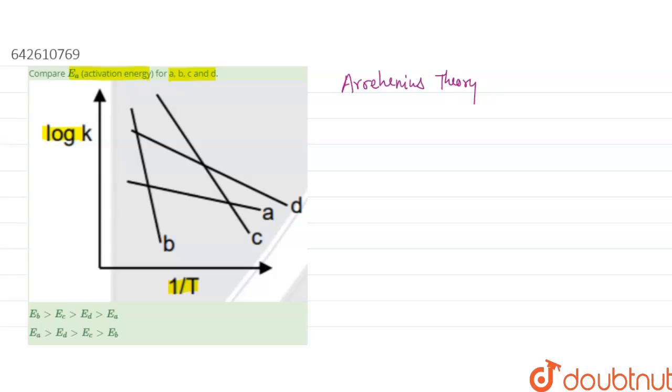What is the formula of the Arrhenius theory? Arrhenius theory is K equals A times e to the minus Ea upon RT.